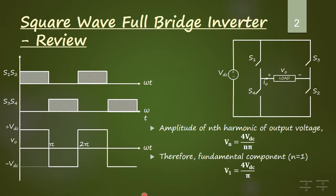Before we move on to selective harmonic elimination scheme, I will give a review of the square wave operation of a full bridge inverter. This topic was already covered in class. Consider a single phase full bridge inverter with source voltage VDC and load voltage V0, and load current I0. The switching pulses given to the four switches are shown here. Switches S1 and S2 conduct from 0 to π, that is half the time period. From π to 2π, S3 and S4 are turned on and S1 and S2 are turned off.